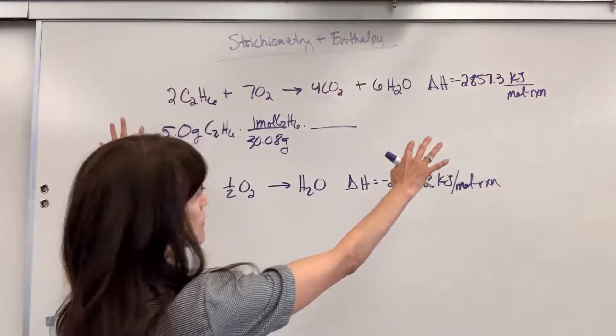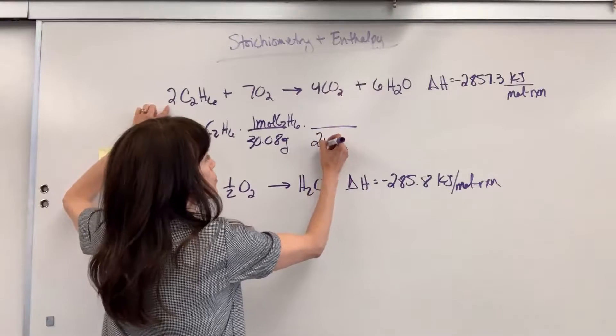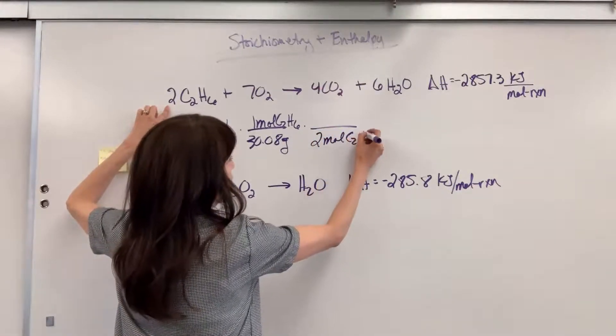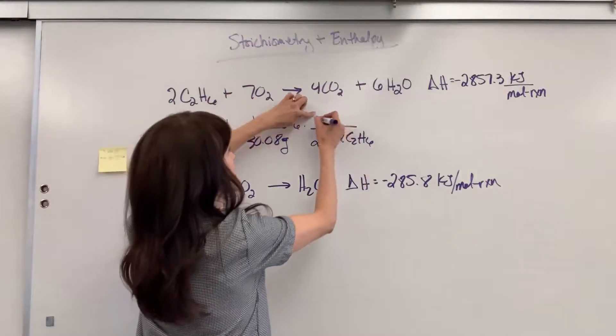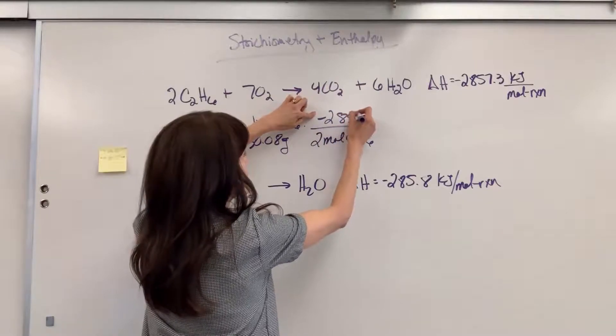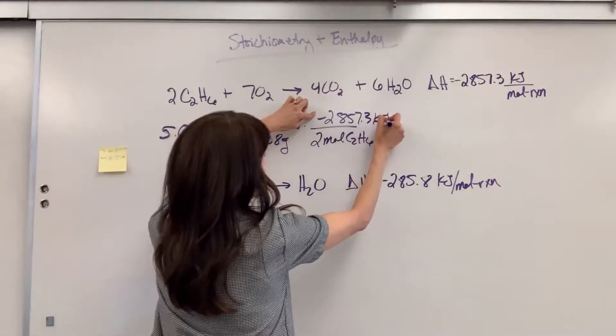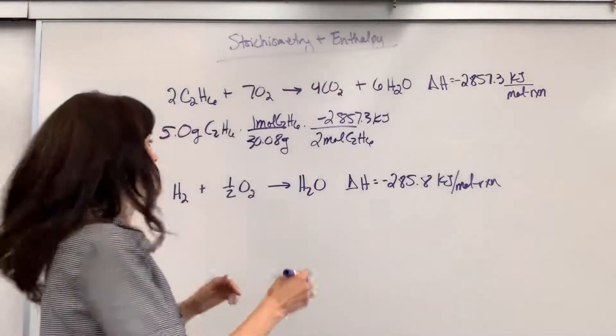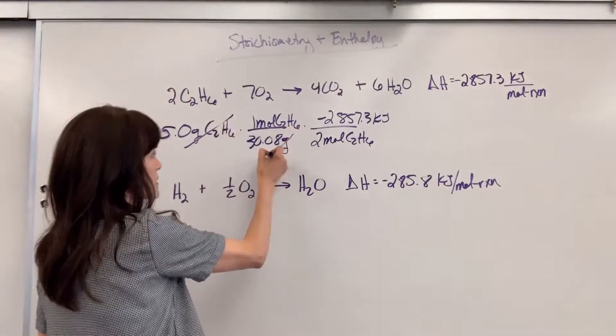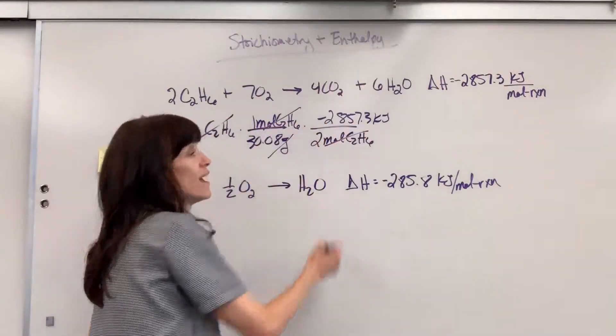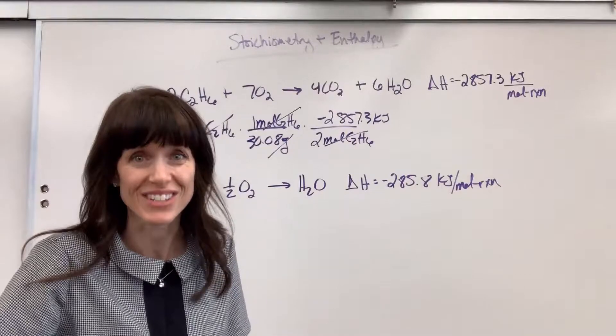So looking at that whole thermochemical equation, two moles of ethane produce 2,857.3 kilojoules. Look at our units. Grams cancel, moles cancel, and we're left with energy. Awesome.